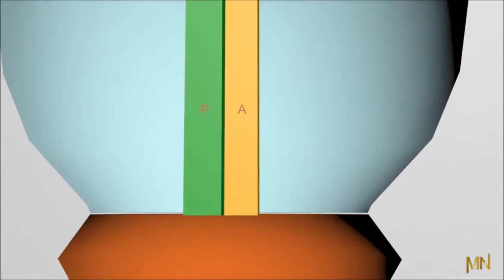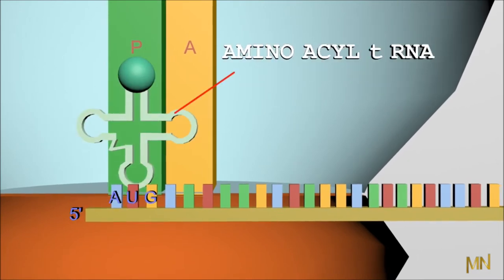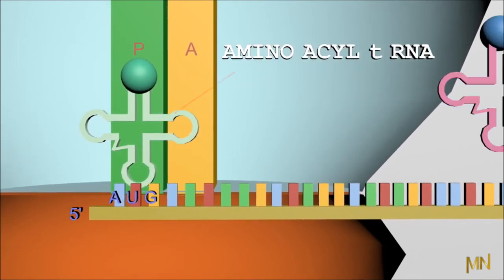Based on the codes in mRNA produced by transcription from DNA, the initiator tRNA attaches to the P site of the 50S ribosomal subunit.